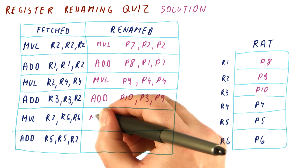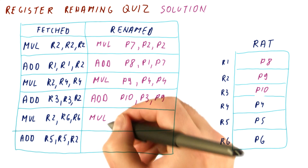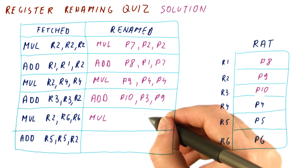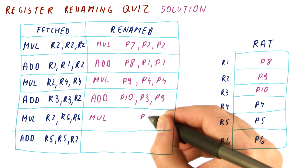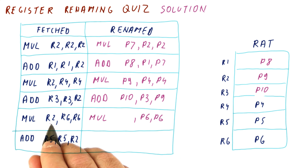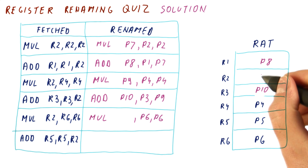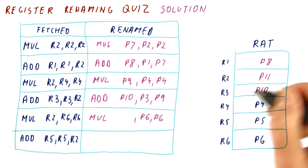Then this multiplication will read R6 and R6 — that's P6 and P6 here. It produces a result and puts it in R2, so R2 now becomes P11.